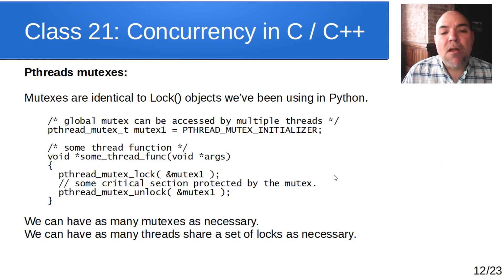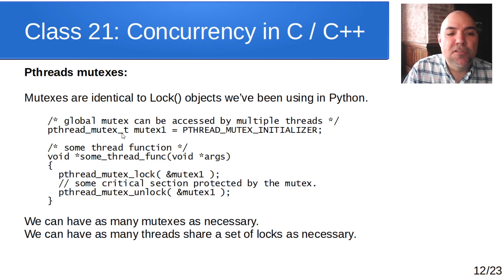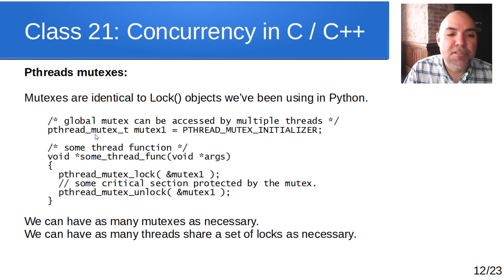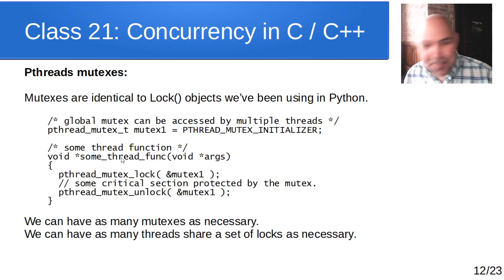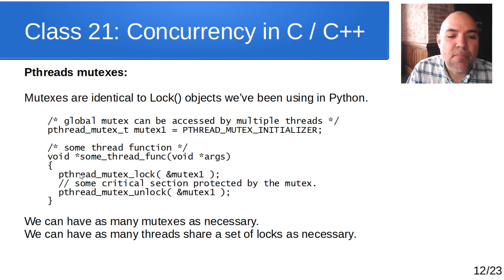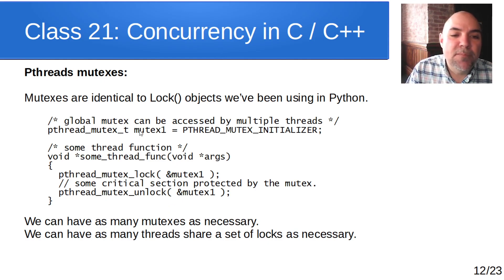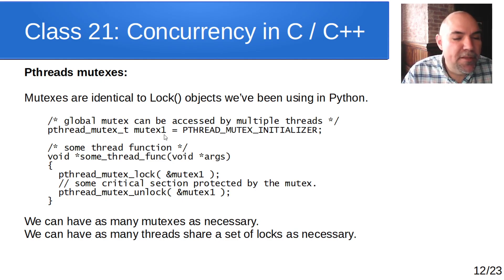Mutexes are identical to lock objects we used in Python. We declare a variable of type pthread_mutex_t and give it a name. To lock it, we pass the address of that mutex variable to pthread_mutex_lock; to unlock it, we pass the address to pthread_mutex_unlock. You can have as many mutex variables as you want — this one I call mutex1, but it can be anything.